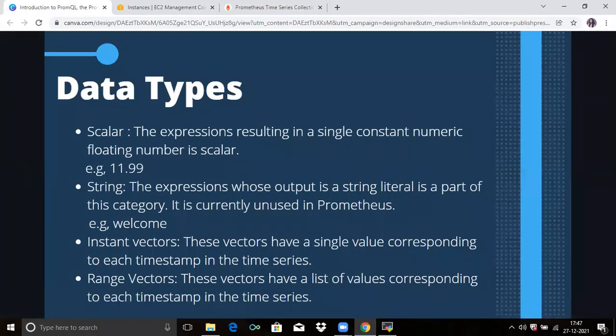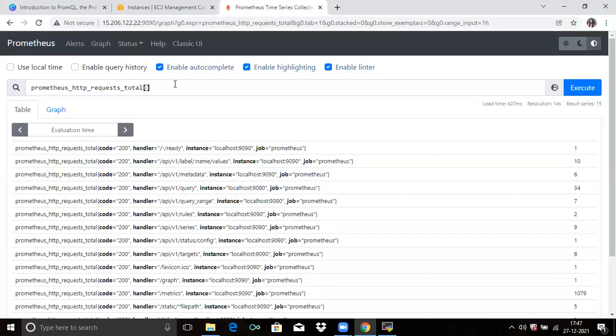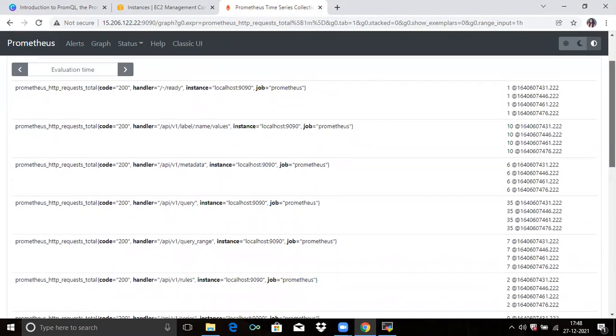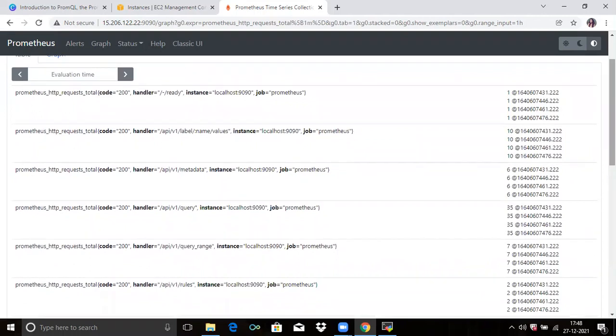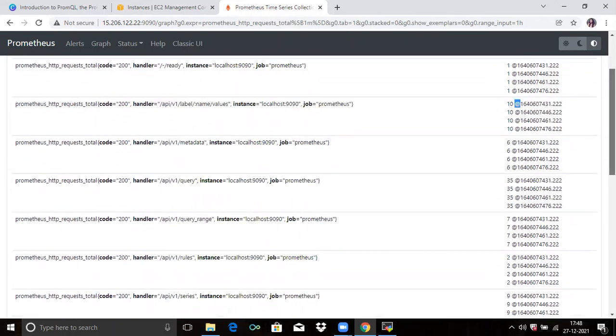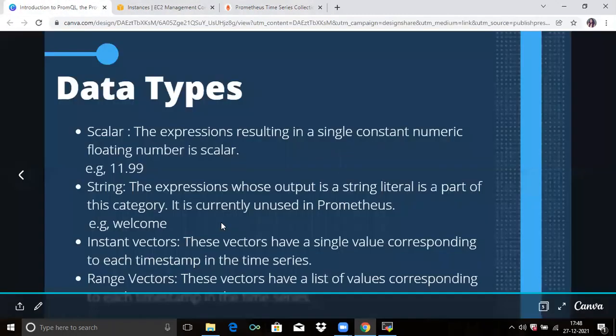Next is range vector. This vector has a list of values corresponding to each time step in the time series. Range vectors can return many samples for each time series. In the same query, if I add one minute here, now click on execute. Now you can see it will return range of samples of each time series and we have four samples for each time series. You can see for first, four samples, for second, for third. That's the range vector.